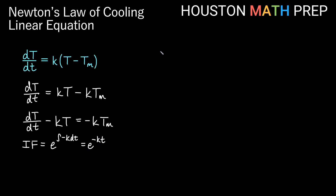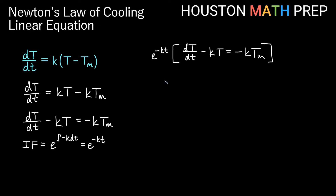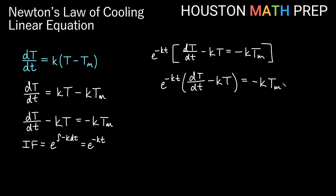We'll go ahead and multiply the entire equation by the integrating factor. So we will have e to the negative kt times our equation: dT/dt minus kT is equal to negative k times T_m. Remember that right side is all just a constant. So on the left side we don't distribute because we know that when we use this integrating factor for a linear first order equation, we just get a product rule on the left side of our integrating factor and our dependent variable. So we know this is a product rule involving e to the negative kt and capital T. Over on the right I actually multiply the e to the negative kt through, so we get negative k times T_m times e to the negative kt.